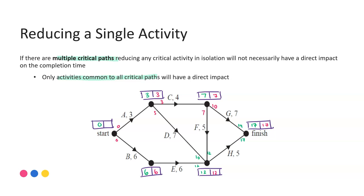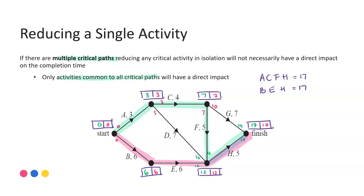Here I've done the forward and backward scan on this graph, and we can see from the start there are two options where I had the latest start time of zero. The first critical path: travelling along A, then C, then F, then H — that's critical path A, C, F, H. The second critical path: travelling along B, E, and also H — gives the same completion time of 17.